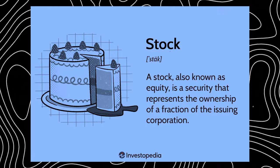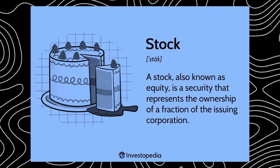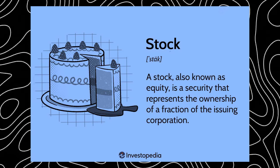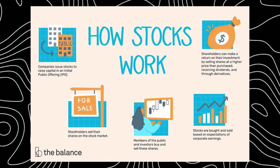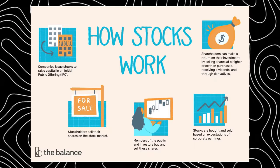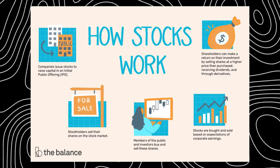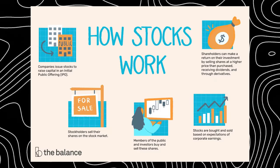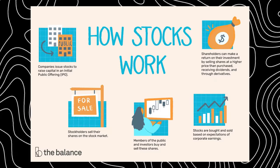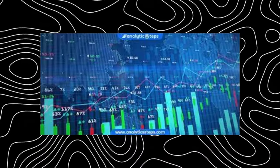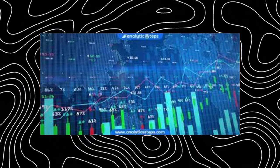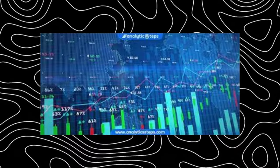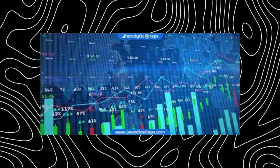Stocks: your ticket into owning a slice of a company. When you buy stocks, you're betting on that company's future success. If they do well, so do you — but companies can go bad, leaving you with less than you started. That's why savvy investors spread investments across multiple sectors, decreasing risk through diversification. The aim isn't to win overnight but to grow your investment steadily over time. You can buy stocks by opening a brokerage account like TD Ameritrade, Vanguard, or Fidelity.